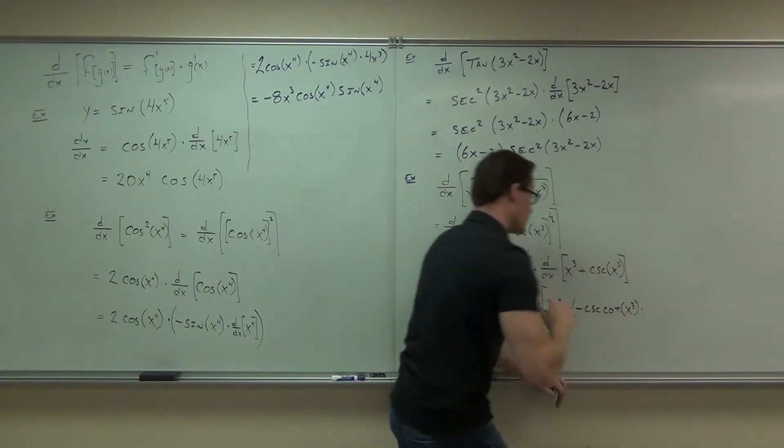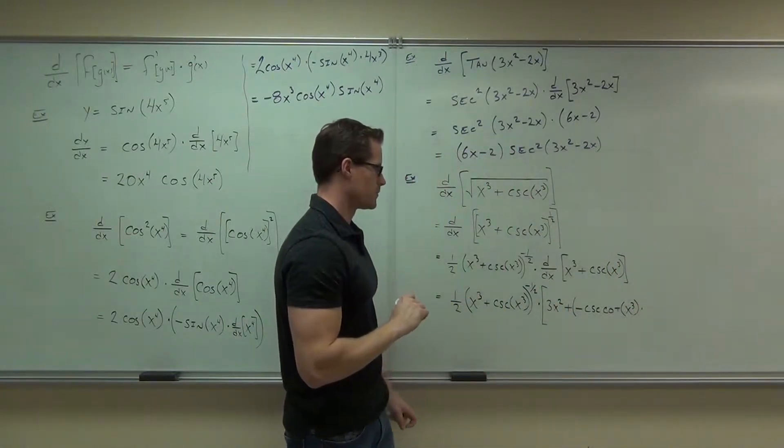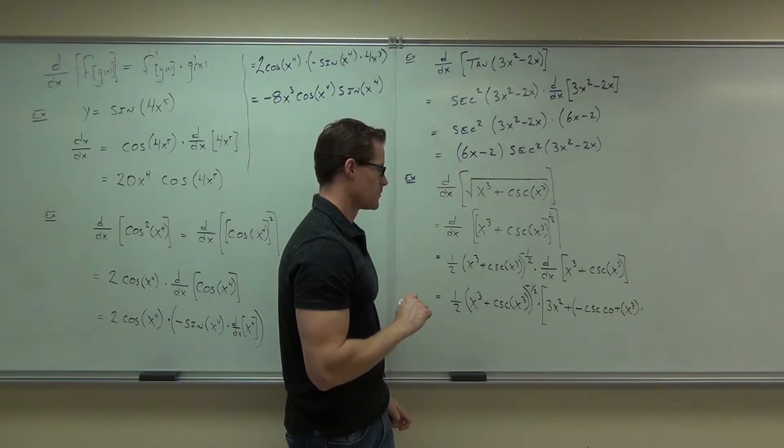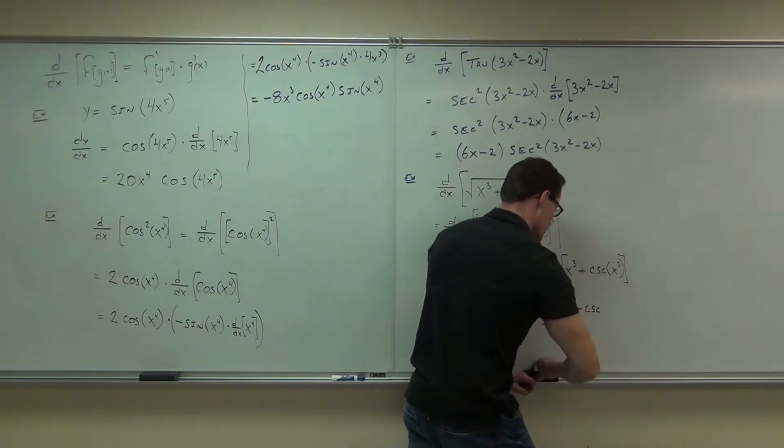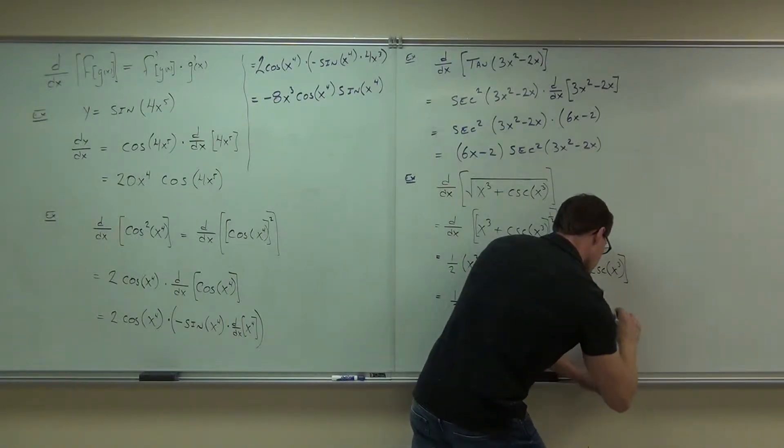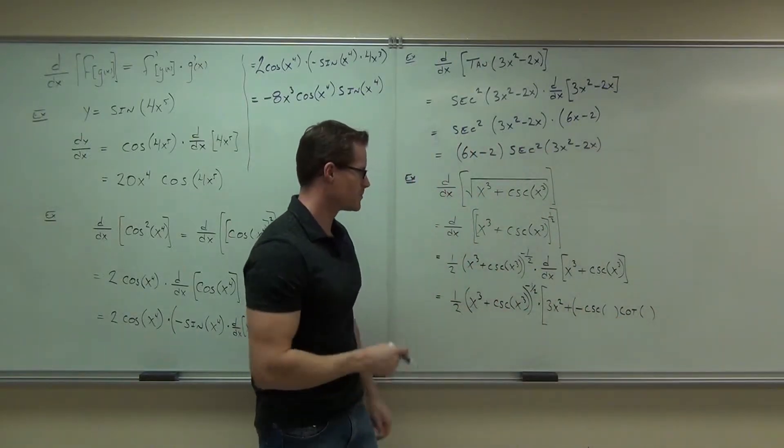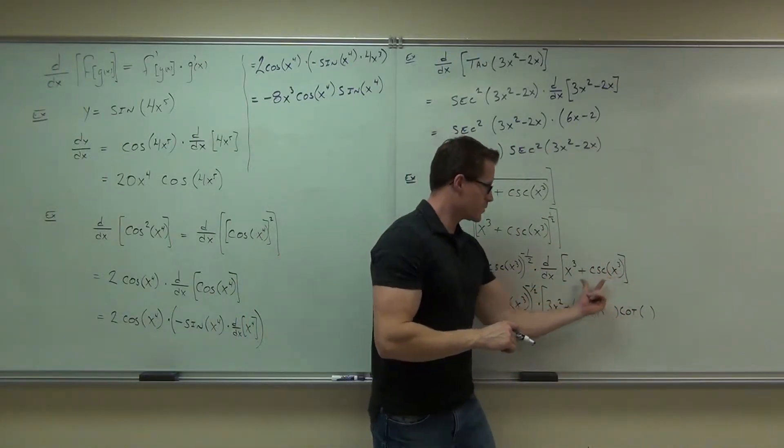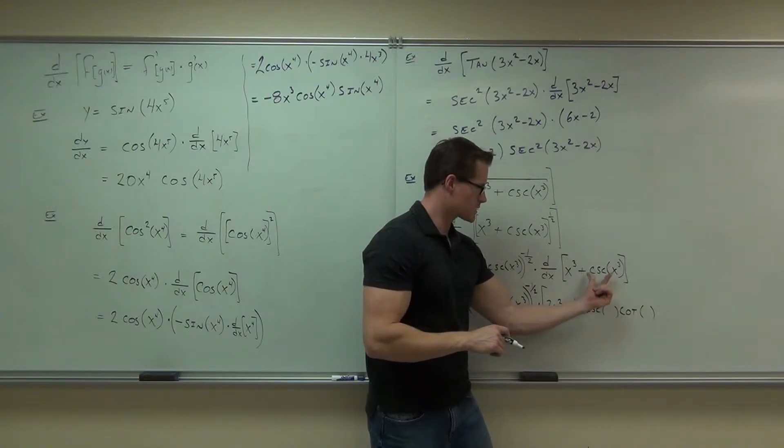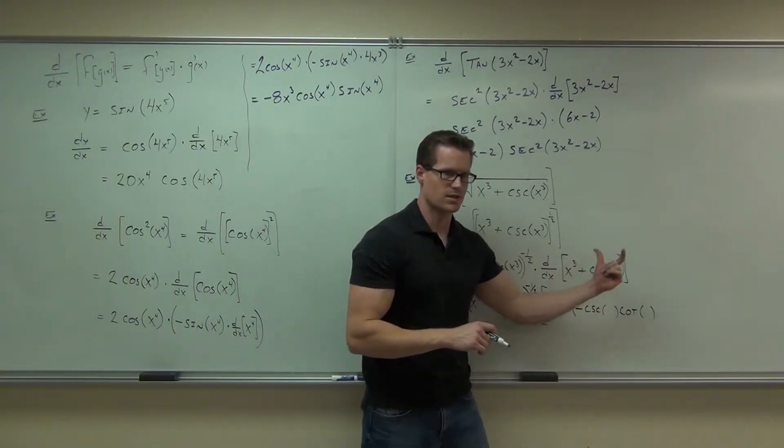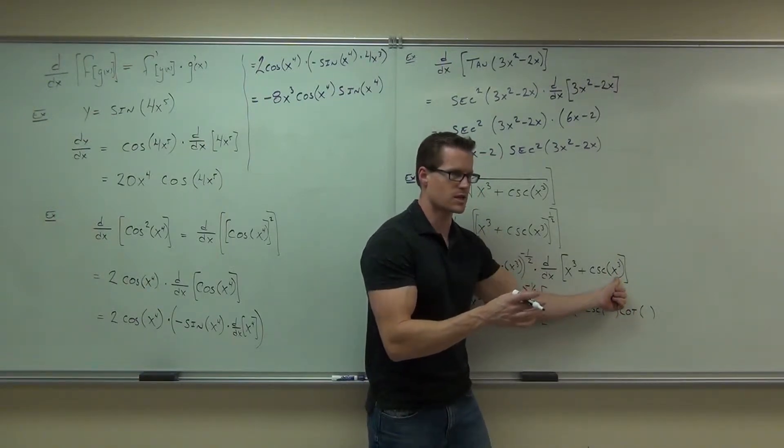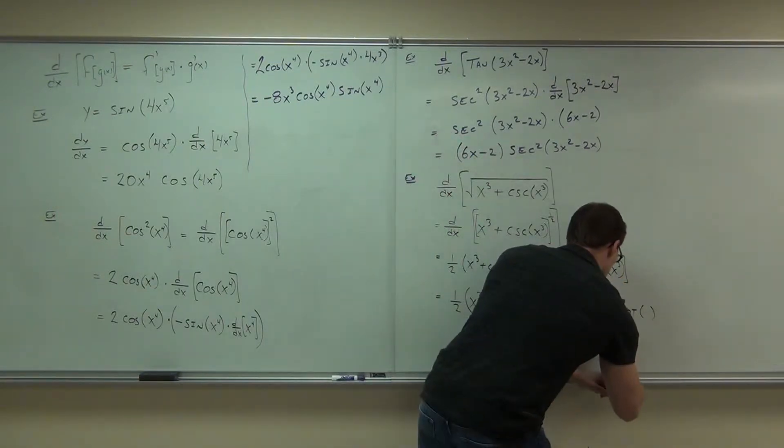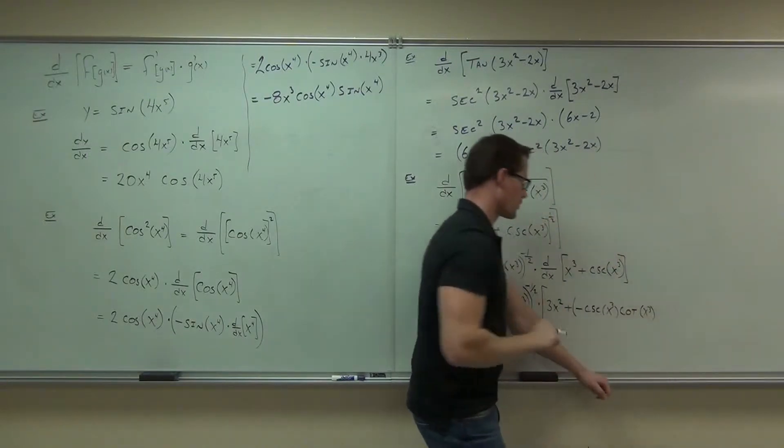Wouldn't that be cosecant x to the third cotangent x to the third? Oh, yeah, sorry. Did I forget? Oh, I did forget that. Shoot. I knew something looked funny. Thank you. So this says, when you do this, cosecant is cosecant cotangent. So cosecant x was cosecant x cotangent x. What our x is, is x to the third in this case. So we go, okay, x to the third, x to the third.